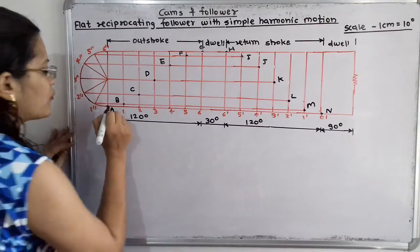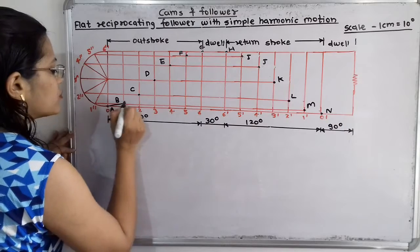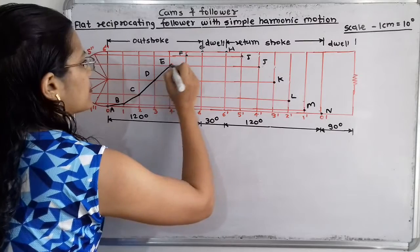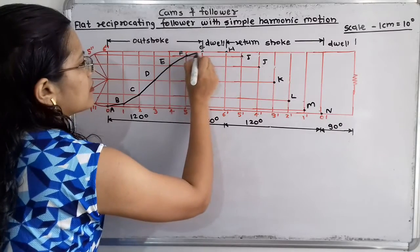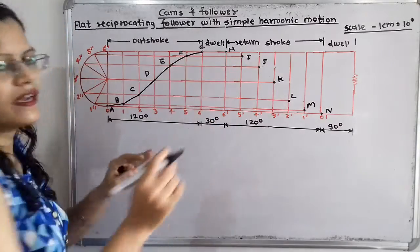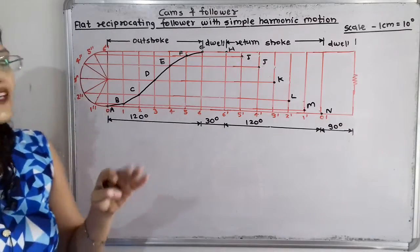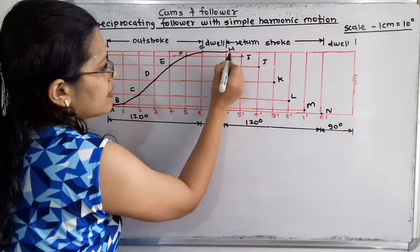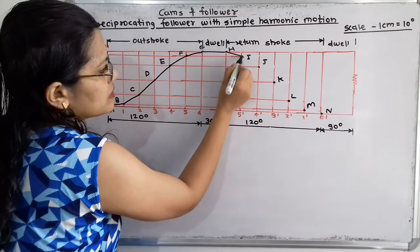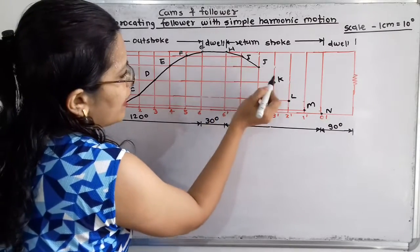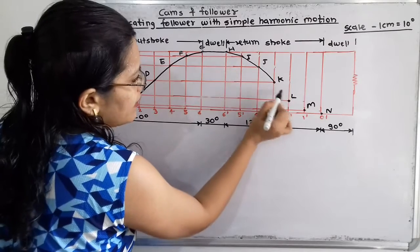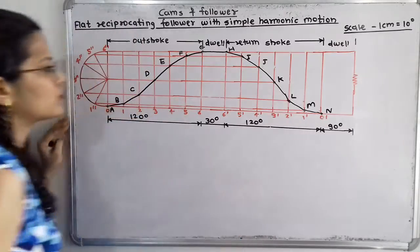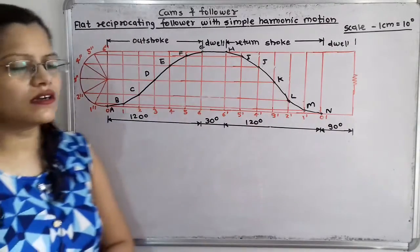Now we have to join the points. From A to B, then B to C, then C to D. During the dwell period the follower remains at rest, meaning here this is a horizontal line. Then H to I, J, K, L, M and N — we have to draw a smooth curve through all these points.